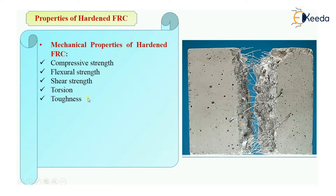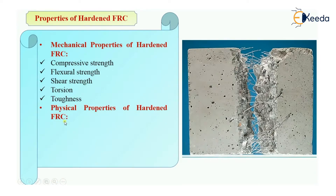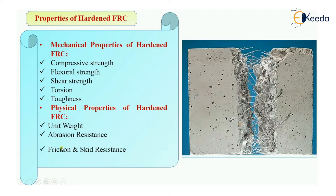These are the mechanical properties of hardened fiber-reinforced concrete which is already set and not in wet condition — that is, compressive strength, flexural strength, shear strength, torsion strength, and toughness. The physical properties of hardened FRC are: unit weight, abrasion resistance, friction and skid resistance, and permeability. We will see them one by one.